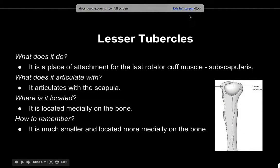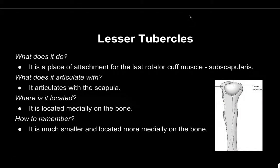The lesser tubercle is the place of attachment for the last rotator cuff muscle. It articulates with the scapula. You can remember it by knowing that it is much smaller and located more in the middle on the bone.